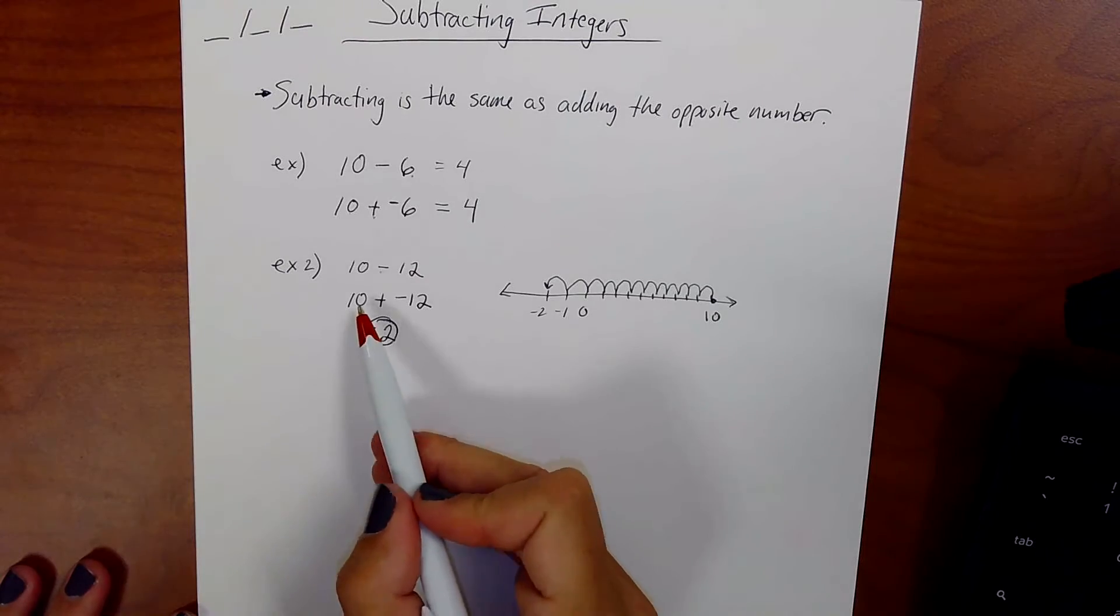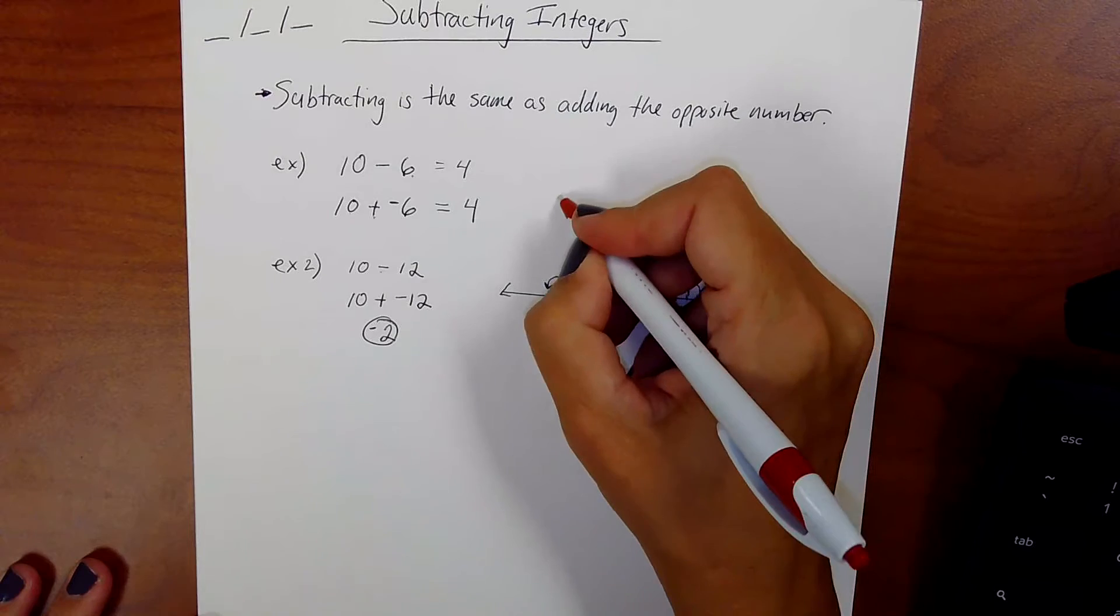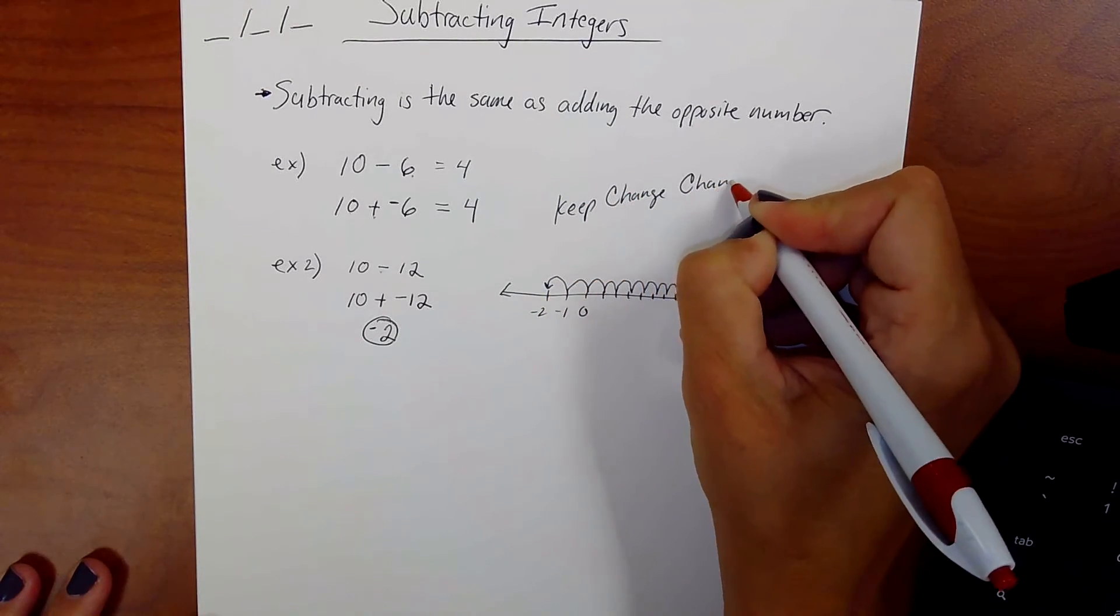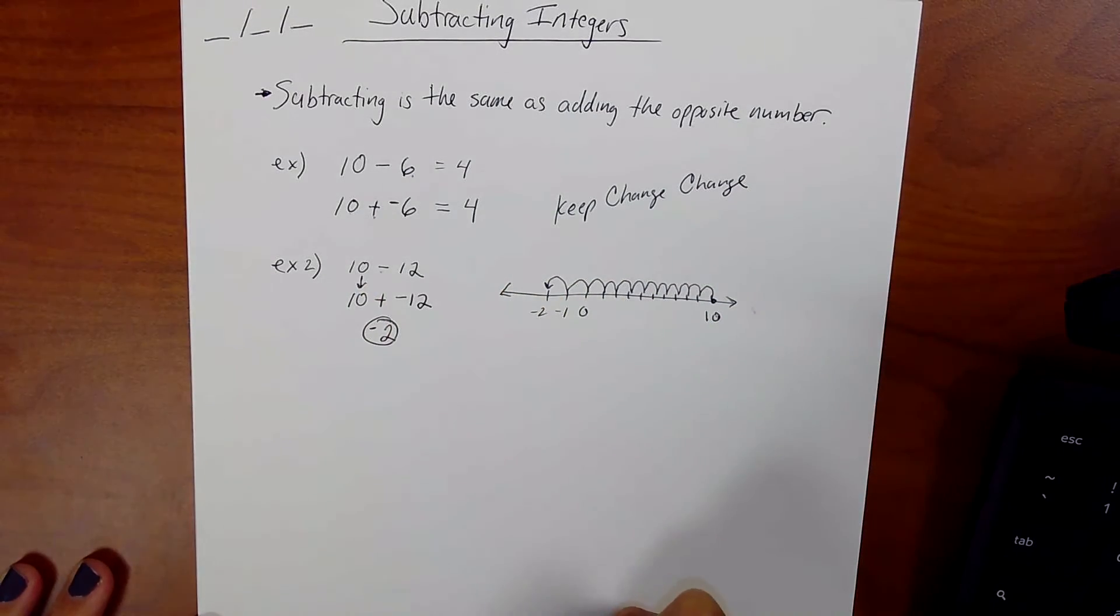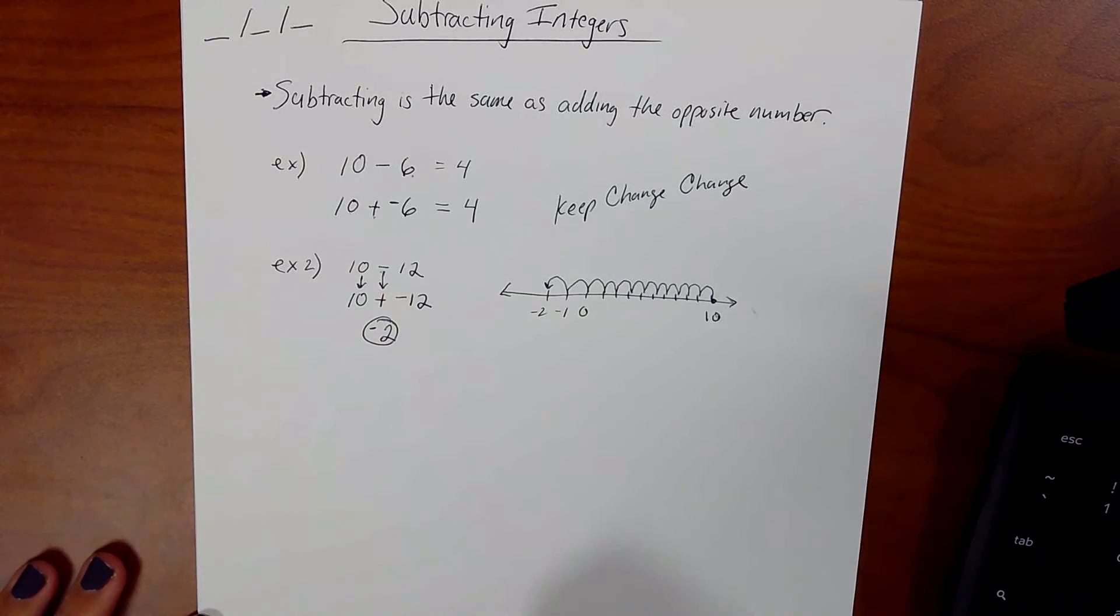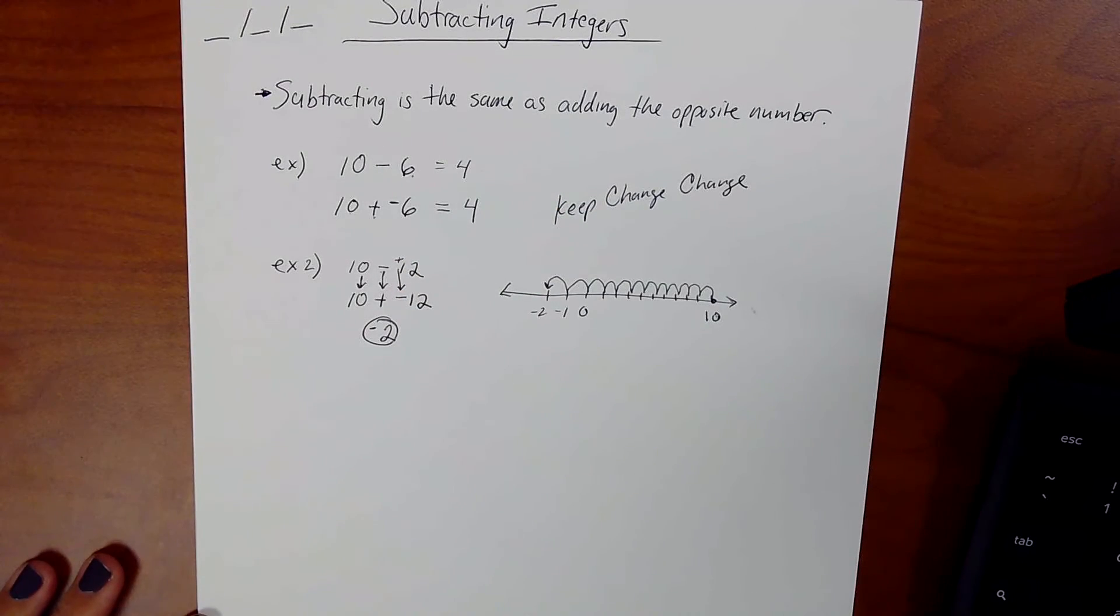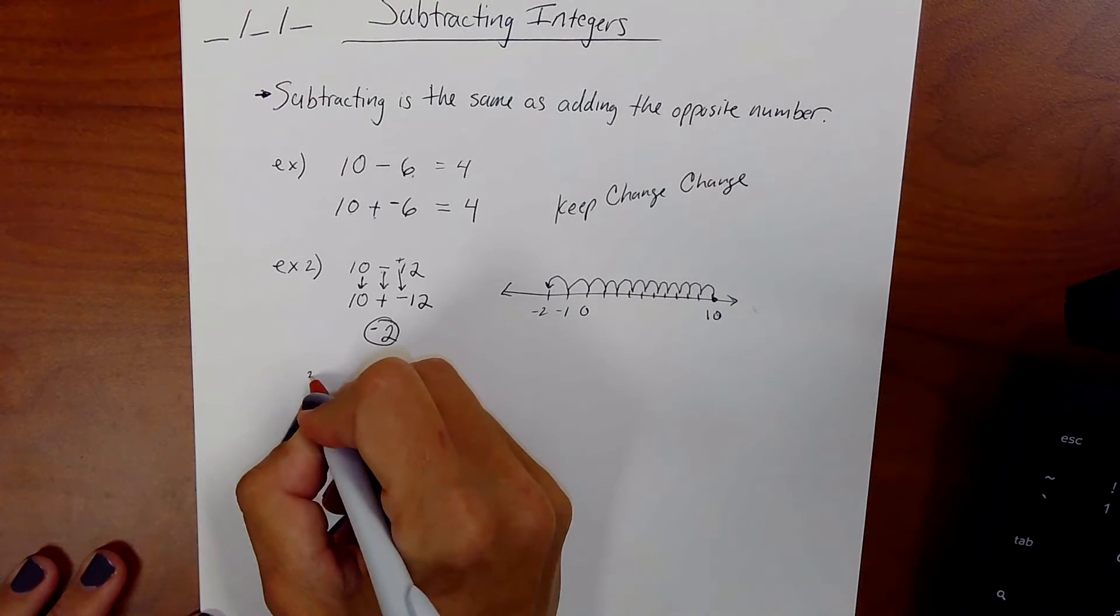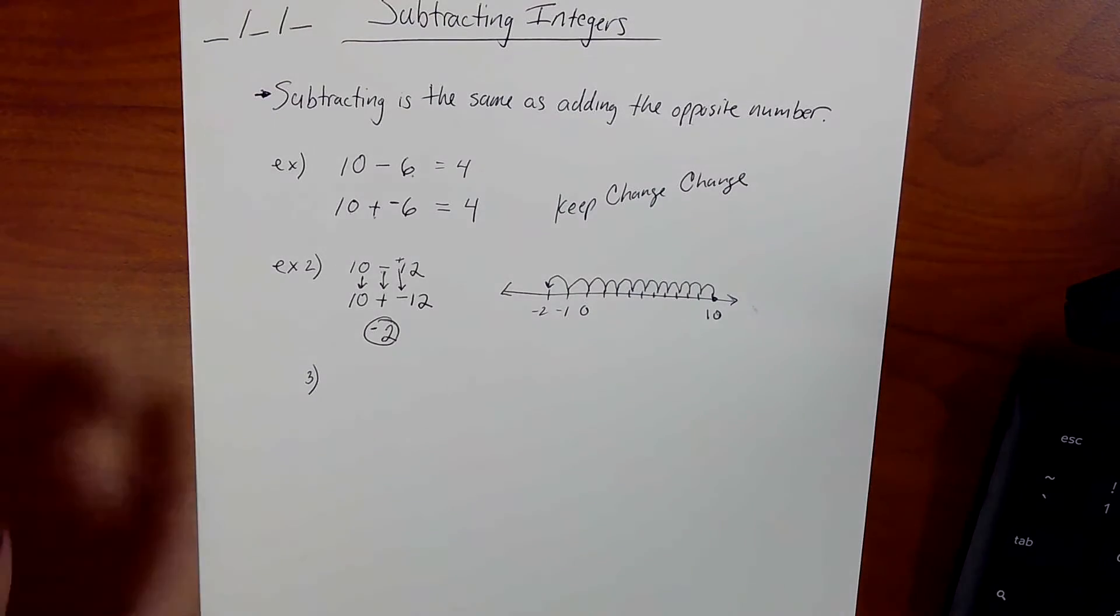So subtracting is the same as adding the opposite. Another way to remember it, you might have heard, is keep, change, change. Because what have we been doing? We've been keeping the first number the same. We're changing subtraction into addition. And we're changing, this was a positive 12, we're changing the sign of the second number. And if you do that every time there's subtraction, and then use the adding rules, you are good to go.